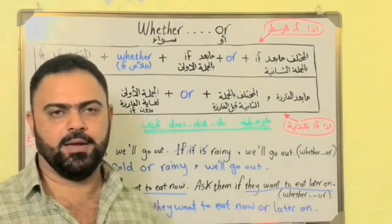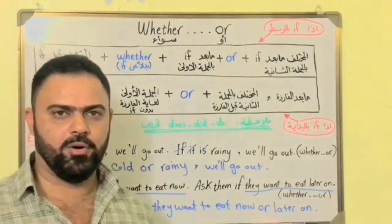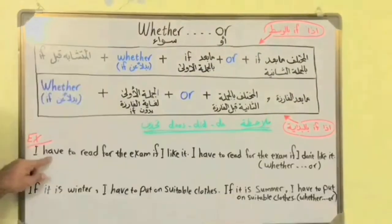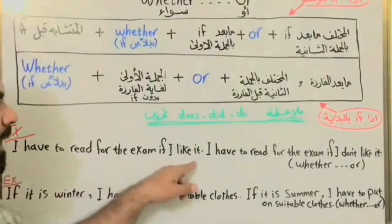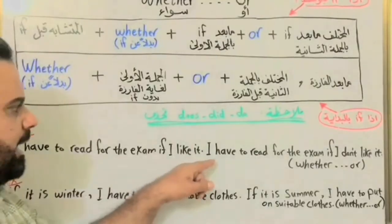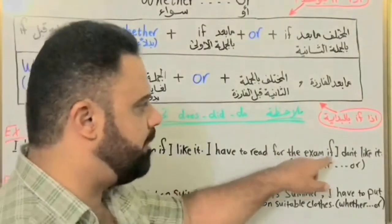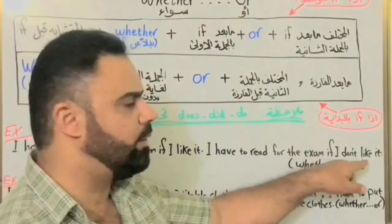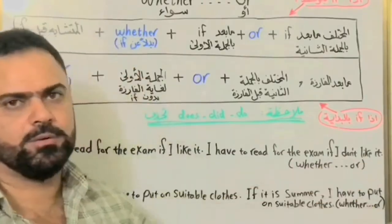I have to read for the exam if I like it. I have to read for the exam if I don't like it. Whether or — let's combine these two sentences.